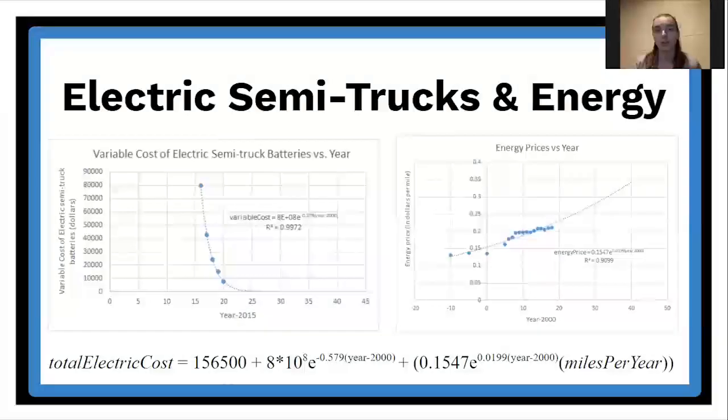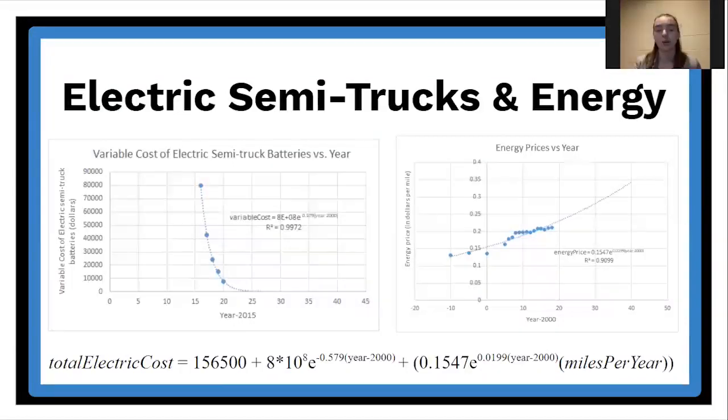Similar to the diesel trucks, the cost of electric trucks was modeled based on the upfront cost and the cost of energy. We modeled them exponentially, but since the technological advances are growing faster than inflation, the upfront cost of electric trucks is a decreasing model with a horizontal asymptote, which gave us the form of our equation, beginning with a constant followed by the upfront cost component and ending with the component for energy. One weakness of using extrapolated data is that trends can change over time, making the data not entirely accurate. Next Vivek will continue with the explanation of our model.